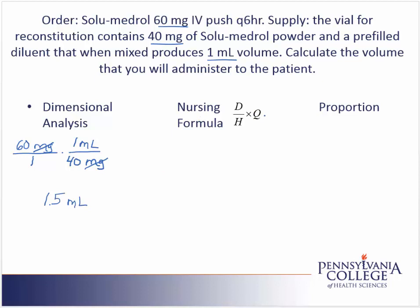We can also solve the problem using the nursing formula. In the nursing formula we start with the desired amount, or doctor's order, which is 60 mg. We place that over what we have on hand, and we have 40 mg in a quantity of 1 ml. In the nursing formula the labels must cancel, and they do. So I'm ready to do the math: 60 divided by 40 times 1 gives me an answer of 1.5, with a label of milliliters. Milliliters is a volume, so I've solved the problem.